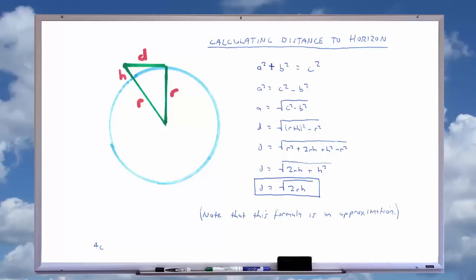Again, we can use the Pythagorean theorem with a equals distance to the horizon, b equals the radius of the earth plus the height of the observer. We have our starting equation, a^2 + b^2 = c^2, then subtract b^2 from both sides, take the square root of both sides, substitute in a = d, b = r, c = r + h, then expand the brackets. r^2 and -r^2 cancel one another out, which leaves us with the equation d = sqrt(2rh + h^2).